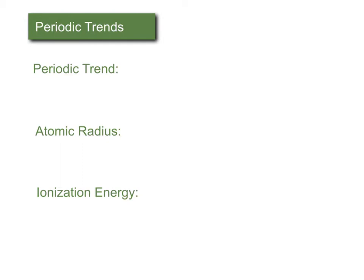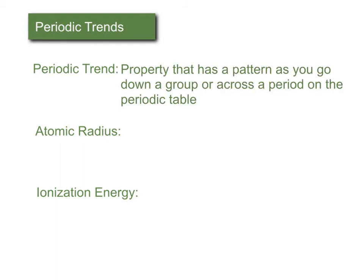So just as a review, a periodic trend is a property that has a pattern across a group or across a period on the periodic table. So it will tend to go up or down depending on the particular property.